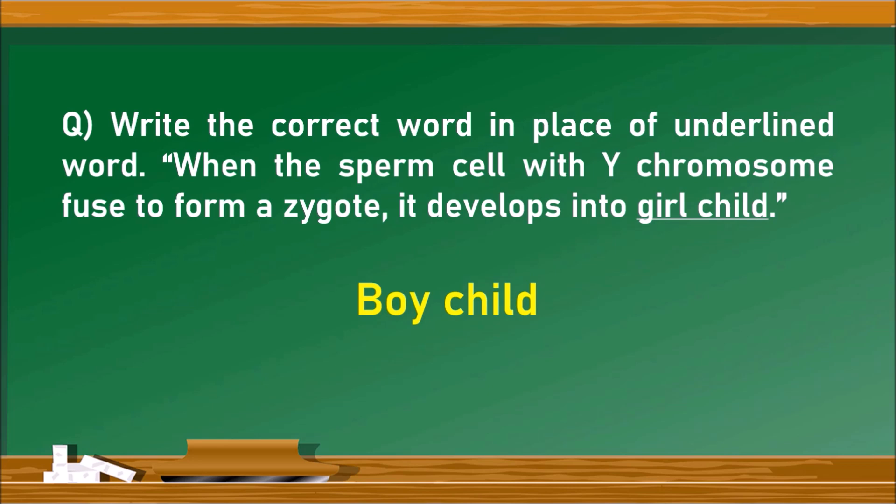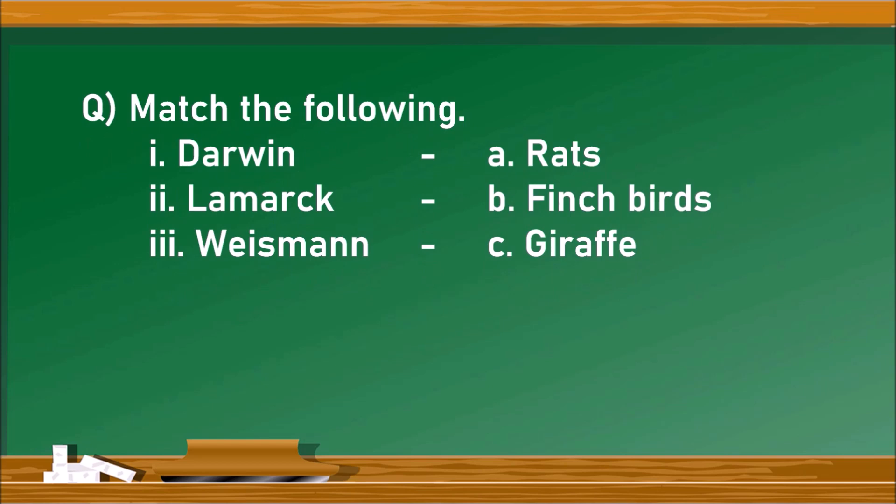Next question: Match the following. Section A contains Darwin, Lamarck, and Weismann. Section B contains rats, finch birds, and giraffe. Darwin is related to finch birds because he observed them in the Galapagos Islands. Lamarck is related to giraffe, hypothesizing the reason behind neck elongation. Weismann researched rats and proved bodily changes are not inherited. The matching is: i-b, ii-c, iii-a.